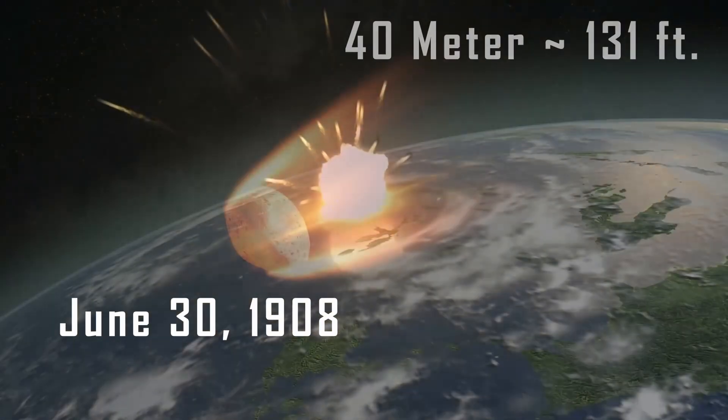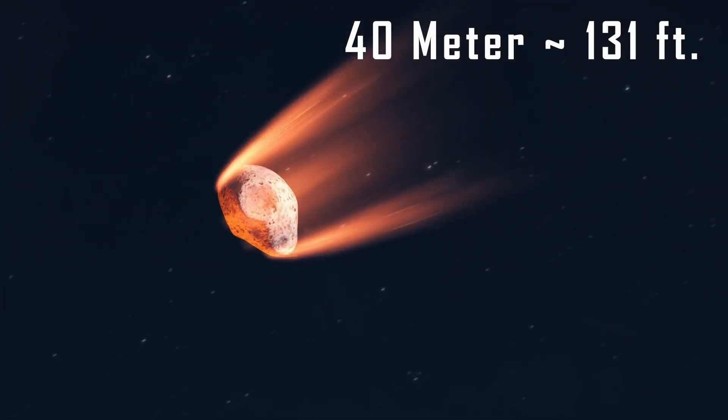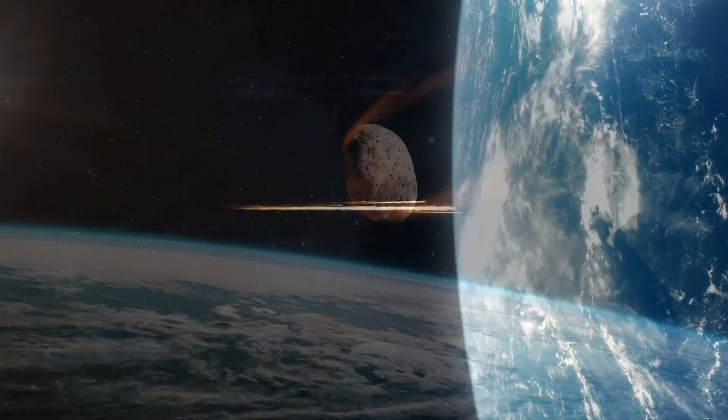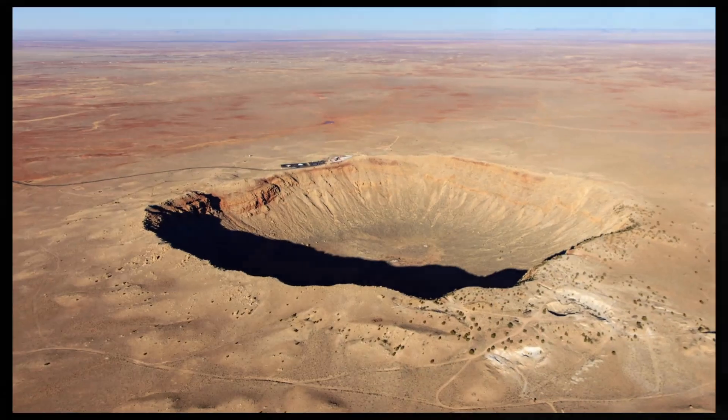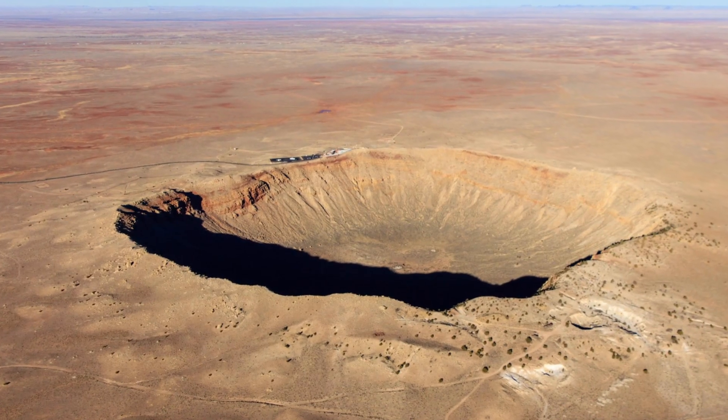On June 30, 1908, a 40-meter asteroid hit the Tunguska region in Siberia. This impact destroyed a London-sized woodland, making it the most influential and most important asteroid impact in recent world history.